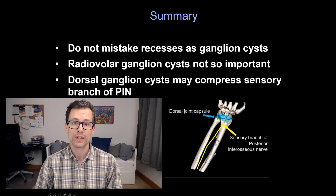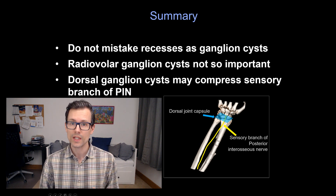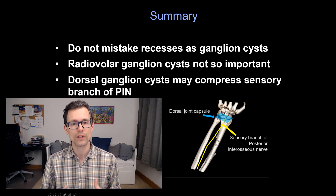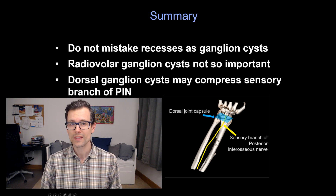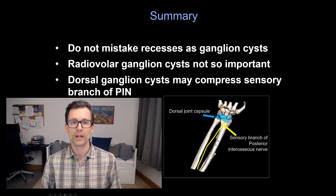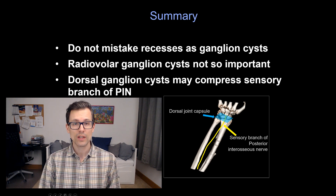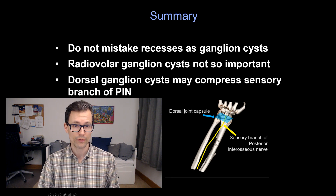Let's recap what we learned in this video. First, don't mistake any physiological recesses for ganglion cysts — if you know the anatomy, you can prevent this. Also, be aware that the radiovolar ganglion cysts are very frequent and clinically basically not relevant. Be very sensitive to even small dorsal ganglion cysts because they compress the terminal branch of the posterior interosseous nerve.